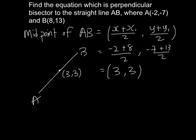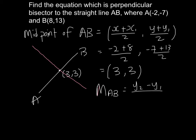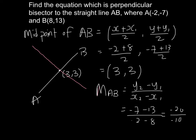Now I'm going to find the gradient for the red color line. In order to find the gradient, we need to find the gradient of AB first. The gradient formula is (y2 − y1) / (x2 − x1). So it will be (−7 − 13) / (−2 − 8), which is −20 / −10. So the gradient for AB is 2.